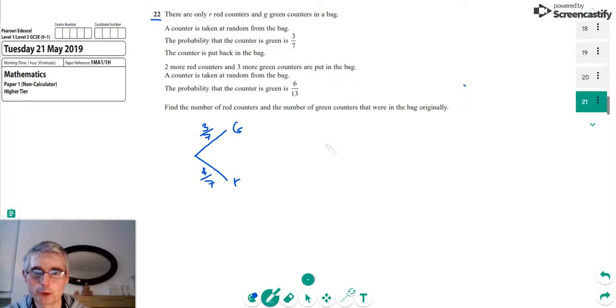So the situation is that we've got 6 out of 13 chance of getting a green counter and the chance of getting a red counter now is 7 out of 13. So we've got these two situations. What we can say in the first case is that the ratio of green to red counters must be 3 to 4.